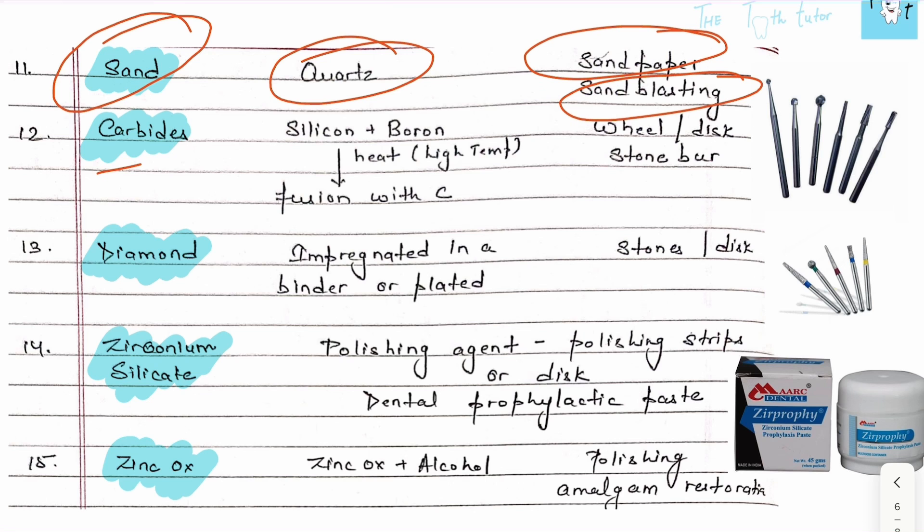We have carbide - carbide burs are really popular. They're made by heating silicon and boron at very high temperature so they fuse with carbon. Then they're coated on wheels or discs or made into burs. Then we have diamond burs, the most popular burs we use, made by binding or electroplating diamond on the bur.